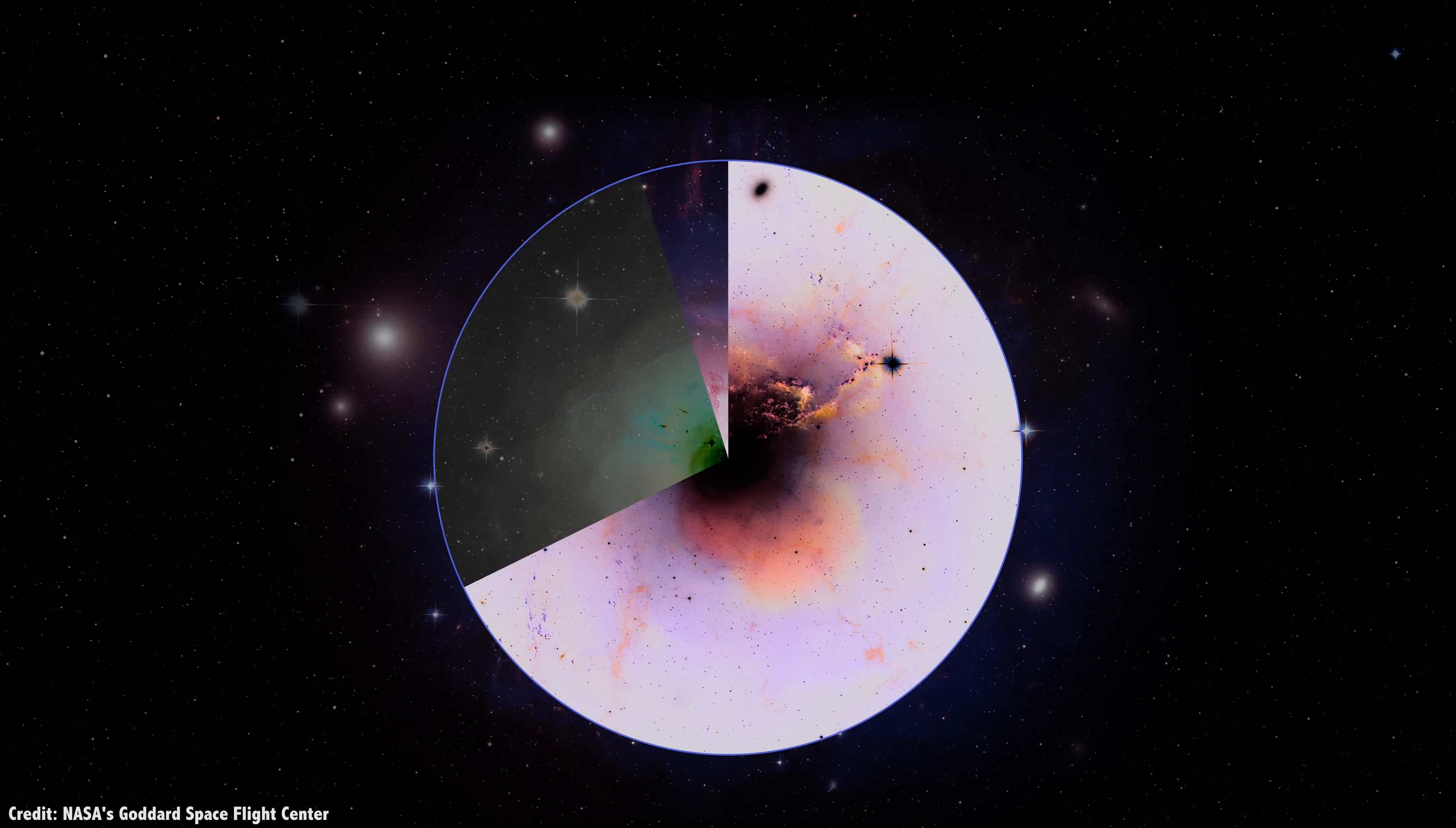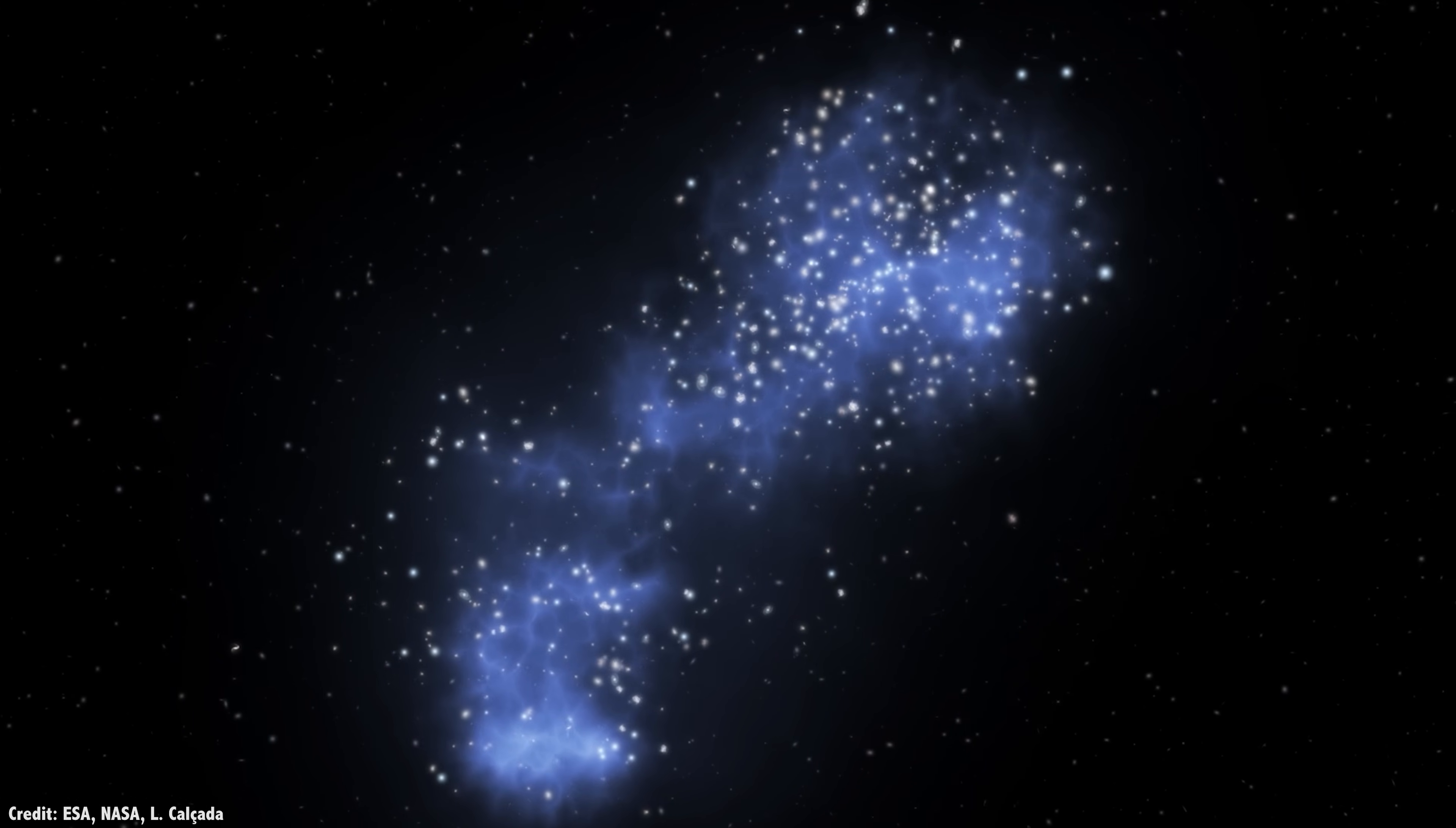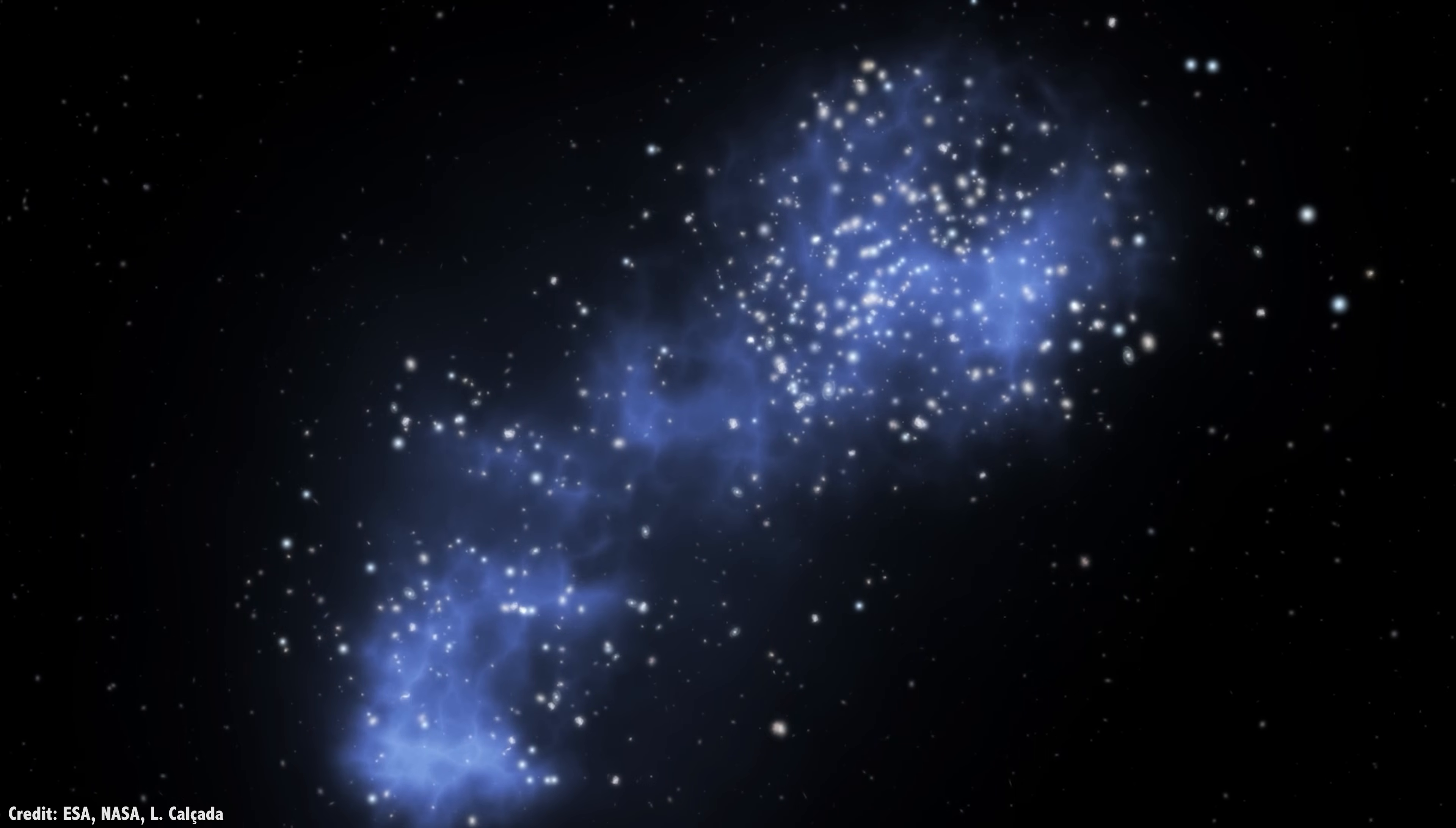While regular matter accounts for 5% of the universe, another 27% seems to be dark matter, which dominates the universe gravitationally. Astronomers still aren't sure what dark matter is, but they've mostly ruled out that it's actually gravity acting strangely at big distances, and they're leaning towards some kind of massive, non-interacting particle. But one idea that just won't go away is that dark matter is actually explained by primordial black holes.